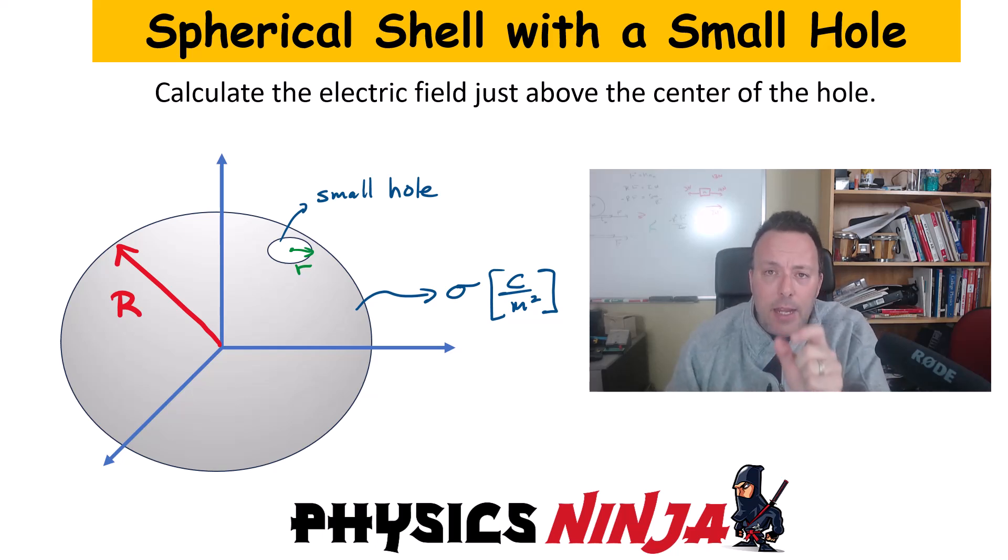Now the radius of that tiny hole, I'm going to write it as little r, and I'm going to assume that the radius of that hole is much, much smaller than the radius of the shell. So the question that we have is, how do you calculate the electric field just above that hole position? And more specifically, how are we going to apply Gauss's Law in order to solve this problem?